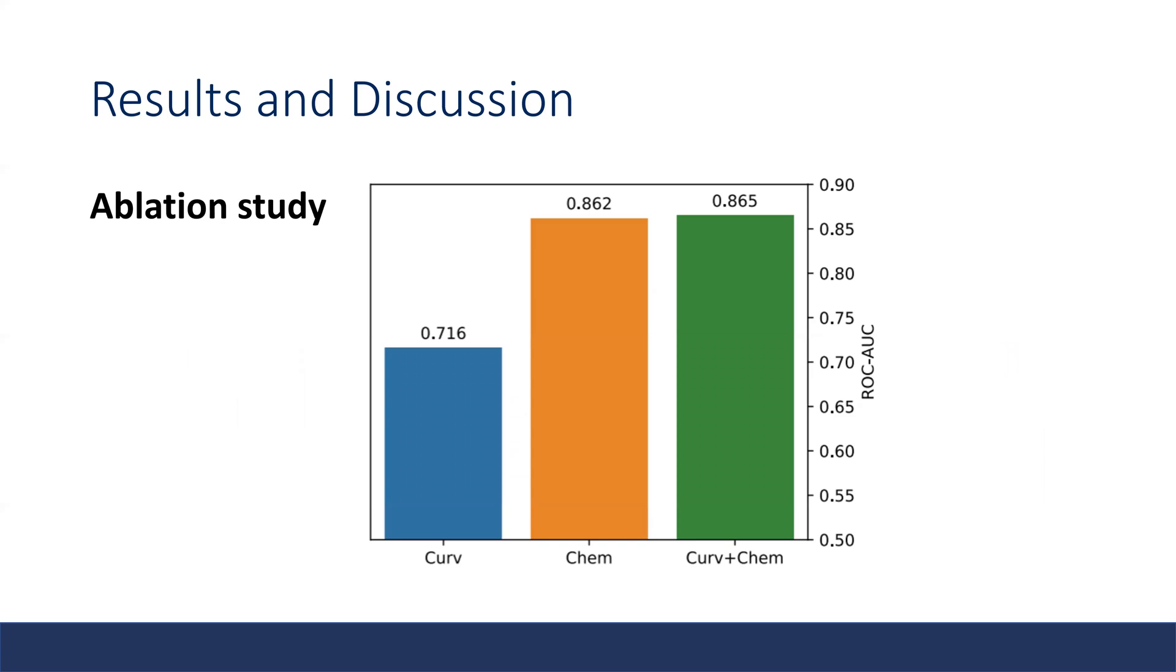Here's an interesting ablation study. The feature vector is concatenation of both curvatures and chemical features. If we only use the chemical features at the input, the result is quite close to the result of the full feature vector. However, if we only use the curvatures at the input, the result is quite far from that one. This shows that both curvature features and chemical features are important in prediction. However, the curvature doesn't seem to have a great influence on the final performance.